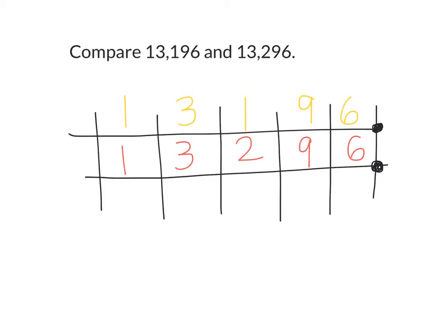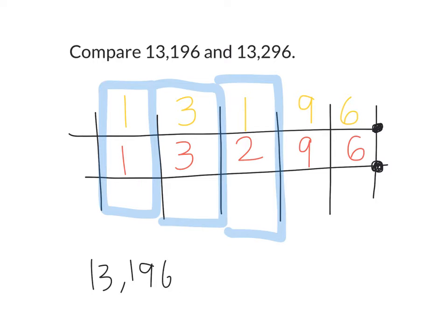What this allows us to do is if I line up Jonah and Maurya, I can see back to back, whose 10,000's place is bigger? It's the same. So we move on to the next biggest, the 1,000's place. Whose 1,000's place is bigger? So let's move on to the next biggest. Whose 100's place is bigger, the yellow number or the red number? Red. Red number. So, we can say that 13,196 is less than 13,296.